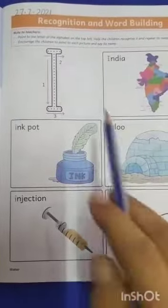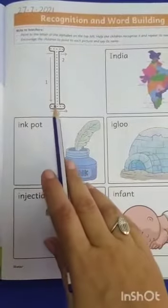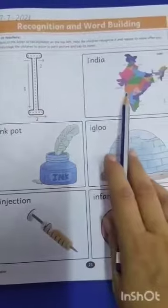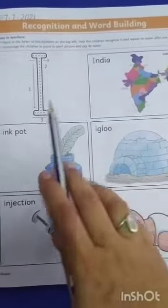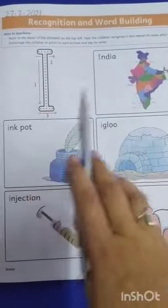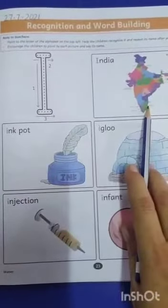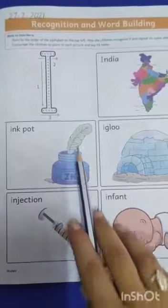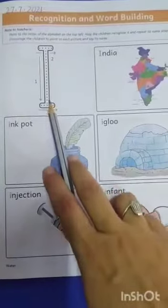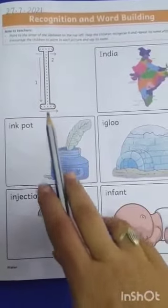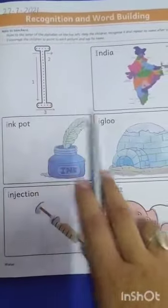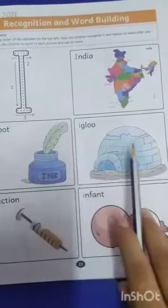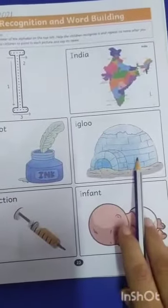The sound of letter I is E. India. E. India. E. Inkpot. E. Inkpot. E. Igloo. E. Igloo.